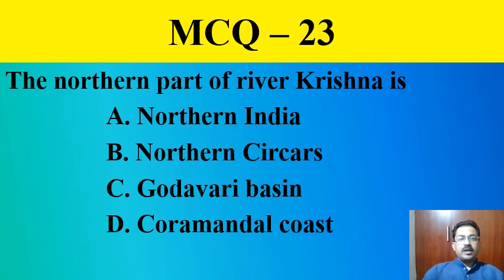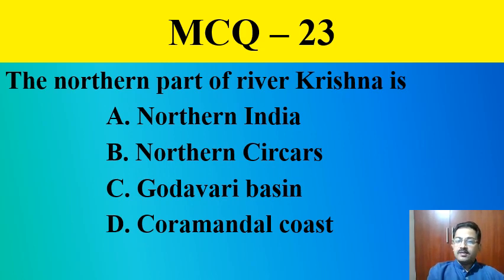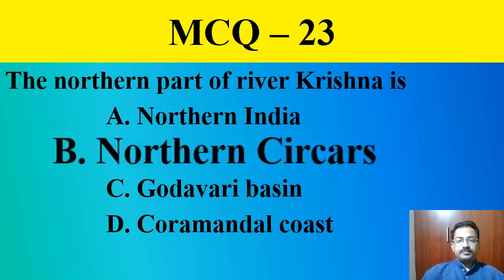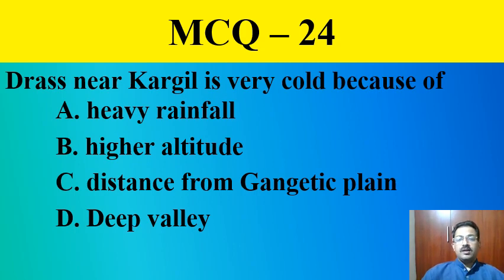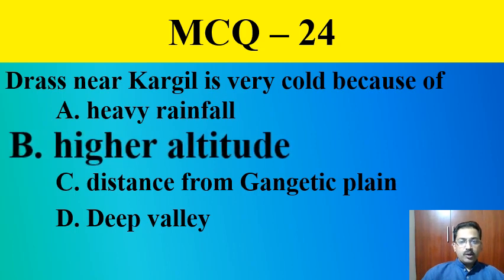MCQ question number twenty-three: The northern part of River Krishna is — Northern India, Northern Sarkars, Godavari Basin, or Coromandel Coast. The correct answer is Northern Sarkars. MCQ question number twenty-four: Drass near Kargil is very cold because of — heavy rainfall, higher altitude, distance from the Gangetic Plain, or deep valley. The correct answer is higher altitude — Drass near Kargil is at a higher altitude, which is why it is very cold.